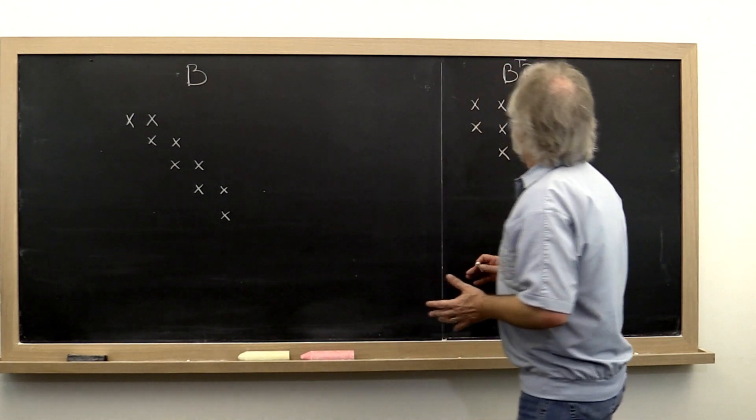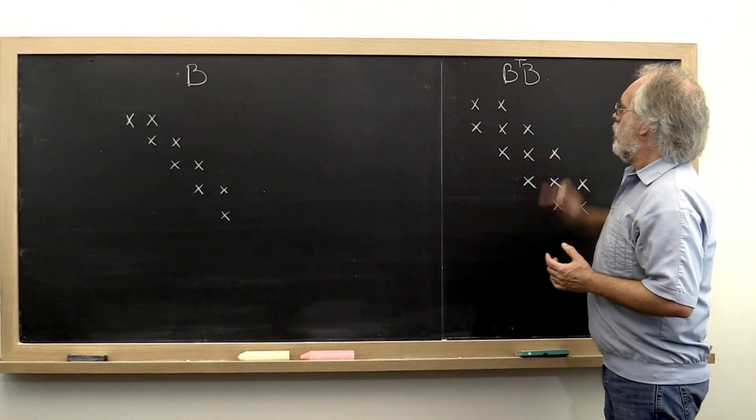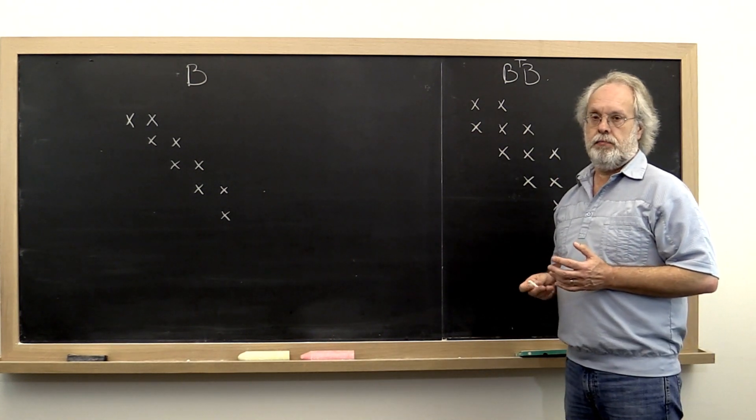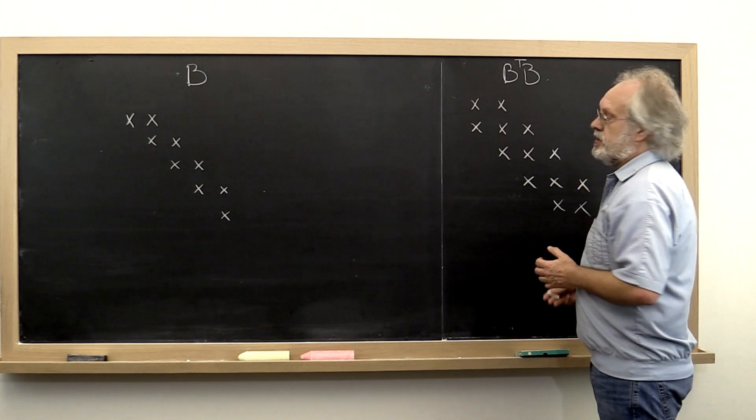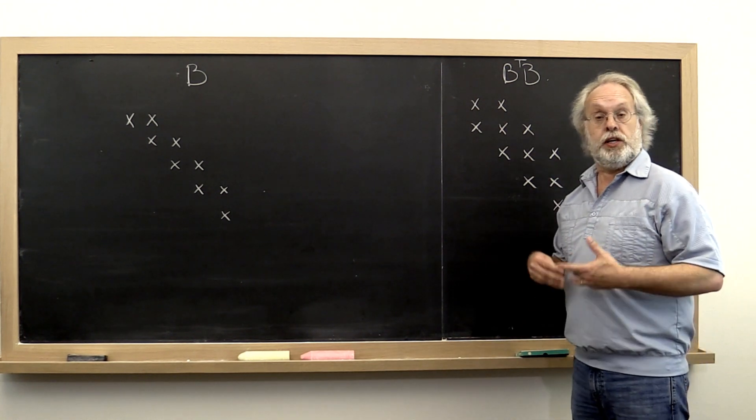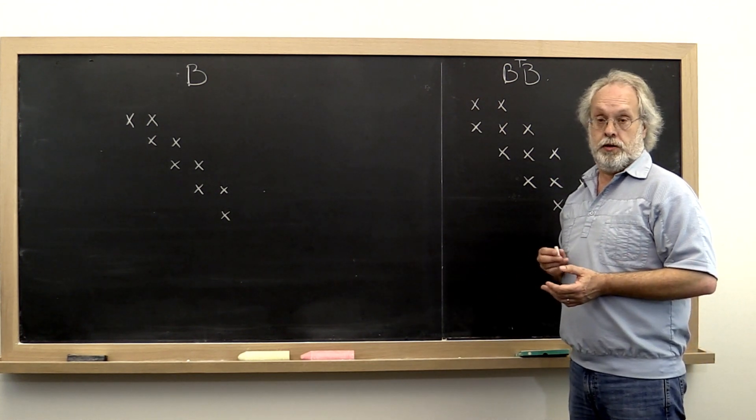Well, we want to somehow form B transpose B because that's a tridiagonal matrix and we know how to do the implicitly shifted QR algorithm with that.